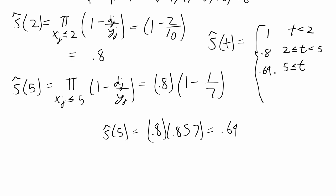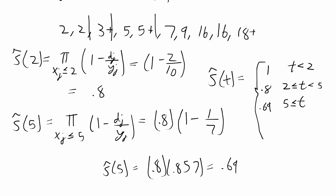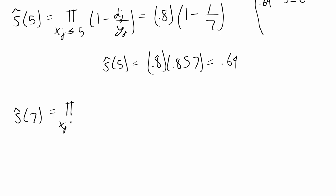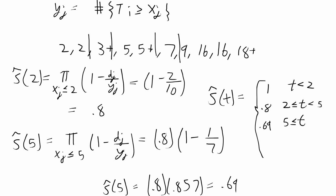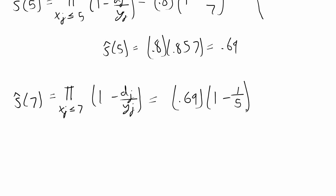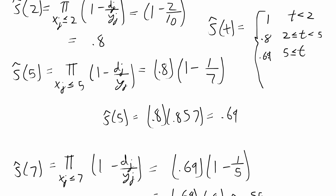The next event occurs at t = 7. S(7) = 0.69 times 1 minus dj over yj at xj = 7. There is one event at time 7, and the follow-up times greater than or equal to 7 number 5 observations. So S(7) = 0.69 × (1 − 1/5) = 0.69 × 0.8 ≈ 0.55. The estimated survival curve is 0.69 between t = 5 and t < 7, then drops to 0.55 for t ≥ 7.